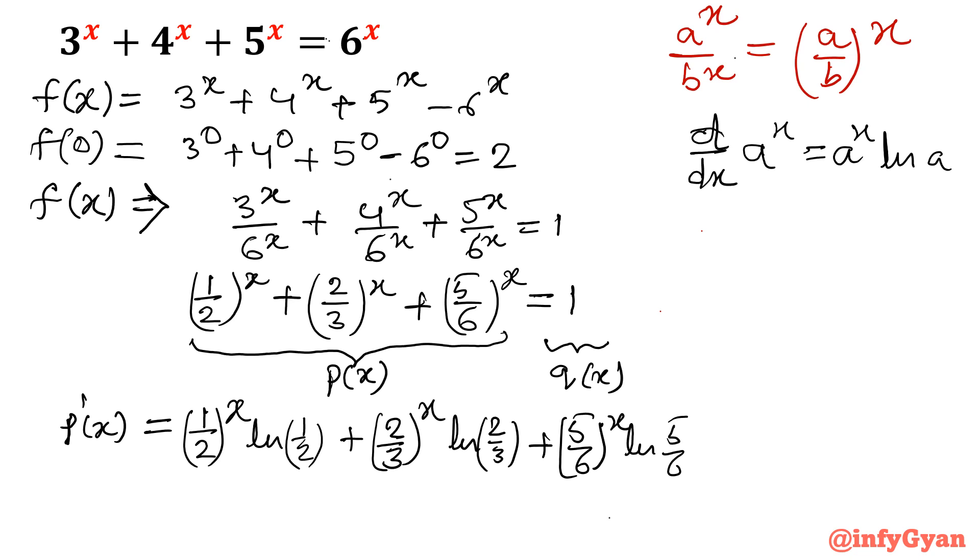We know that a^x will be always positive for all real values of x. So if you look at these three brackets, they all will be positive - whether you are passing x negative, positive, or 0, the value will be positive, nonzero.